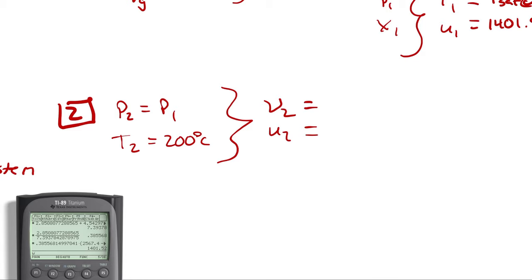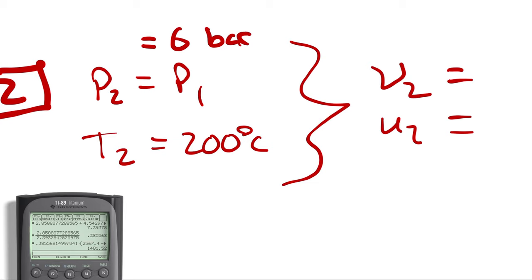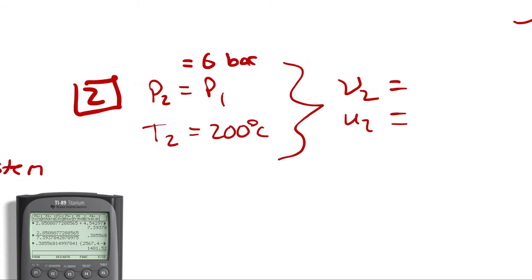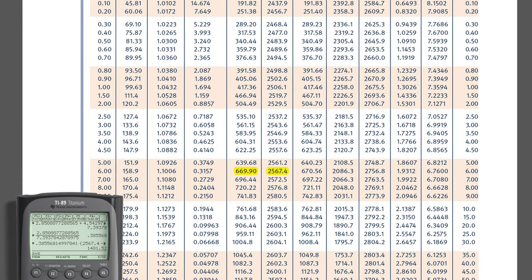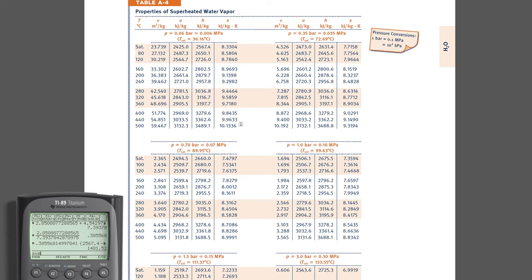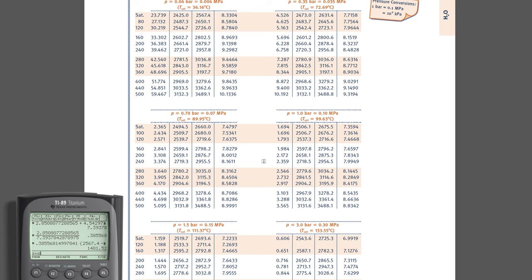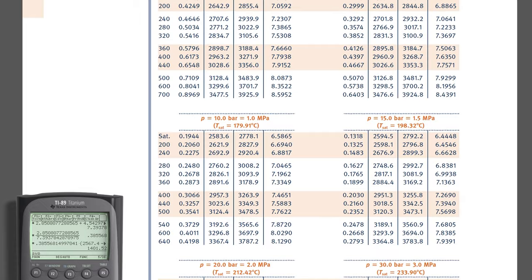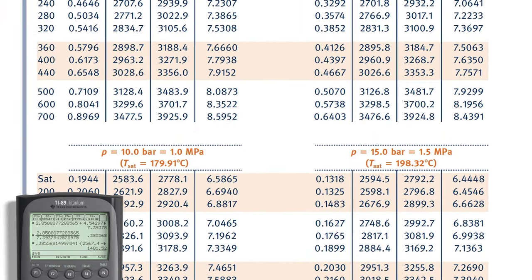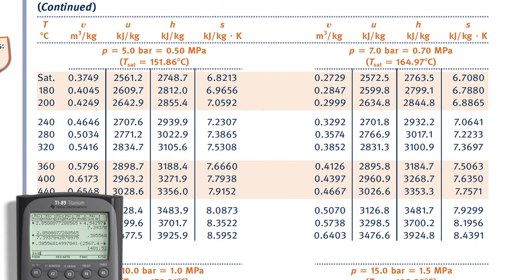Now I need V2 and U2 at state 2 (6 bar, 200°C). To fix the phase, I compare 200°C to the saturation temperature at 6 bar (158.9°C). Since 200 > 158.9, we have a superheated vapor. Jumping into the superheated vapor tables at 6 bar — but 6 bar does not have its own pressure subtable, so I must interpolate between 5 bar and 7 bar at 200°C.